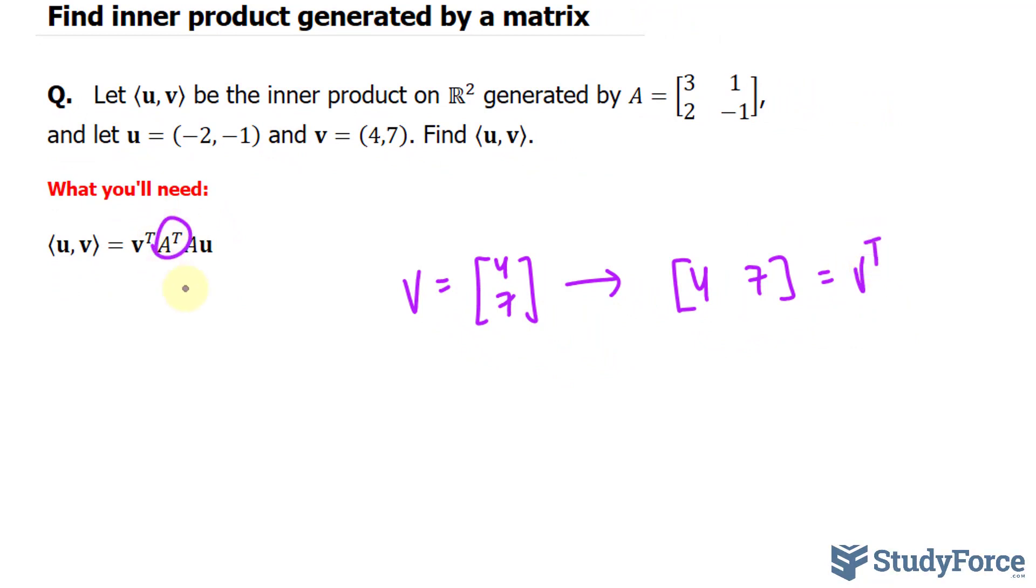Also we have to find the transpose of A, so these rows become the columns. Let me write that down: 3, 1, 2, negative 1. And we multiply by u.